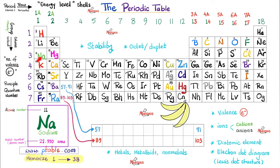Let's look at sodium, for example. How many shells do we have? Look at the number of the period — we have three shells. And how many electrons exist in the outermost, or valence shell? You look here — it's called group 1, so only one electron in the outermost shell. Let's try oxygen. How many shells? Two shells. How many electrons in the outermost shell? Six electrons.